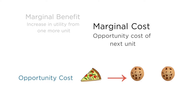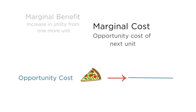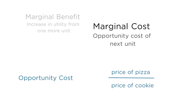What determines that? The ratio of their prices. The more expensive pizza is relative to cookies, the more cookies you have to give up to get more pizza. Therefore, the opportunity cost — or the marginal cost of a slice of pizza — can be expressed as the ratio of the price of a slice of pizza to the price of a cookie. It should sound familiar; it's the price ratio discussed in the previous lectures.